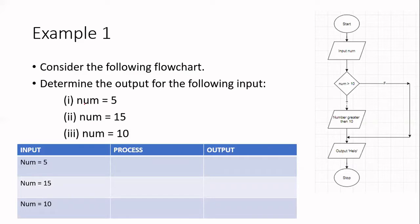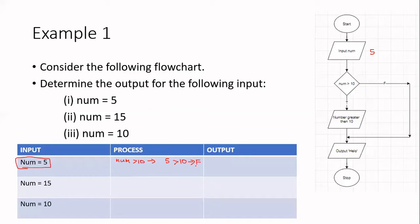Let's first look at the situation when num equals 5. At the input box, num now has the value 5. We're testing it for this input to see what output we get. The process here is: num greater than 10. If num is 5, then we're asking: is 5 greater than 10? If you evaluate this condition, it evaluates to false — 5 is not greater than 10, so my condition evaluates to false.